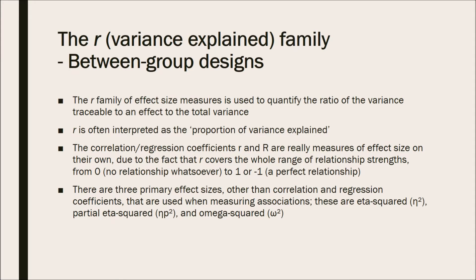Starting off with between-group designs and a general overview of the R family. The R family of effect size measures is used to quantify the ratio of the variance traceable to an effect to the total variance. R is often interpreted as the proportion of variance explained. The correlation and regression coefficients R are rarely measures of effect size on their own, due to the fact that R covers the whole range of relationship strength, from 0, which stands for no relationship whatsoever, to 1 or negative 1.